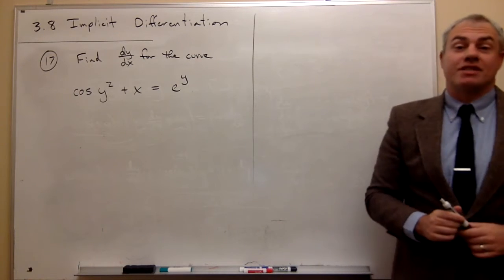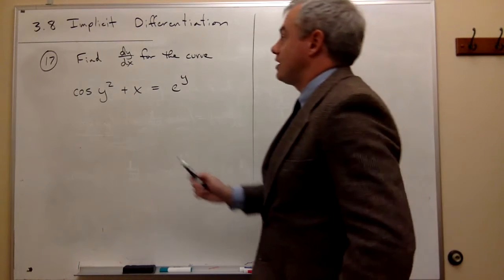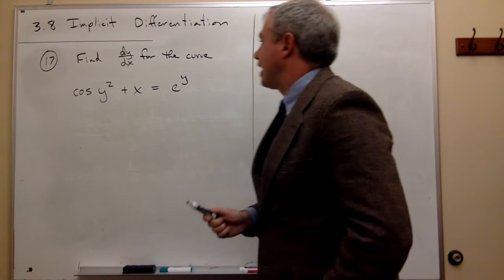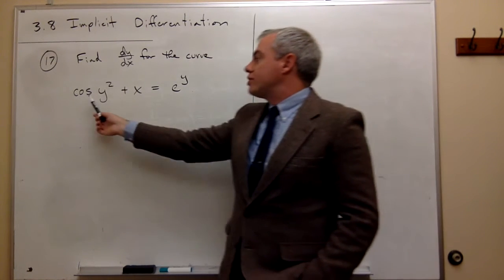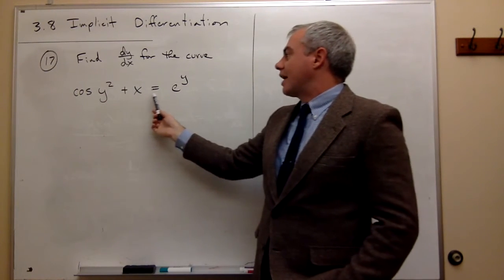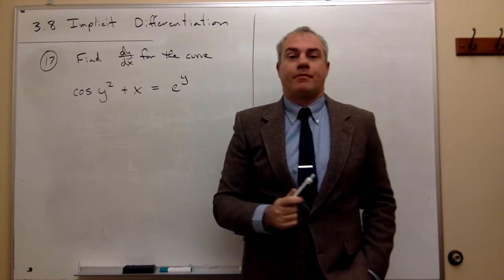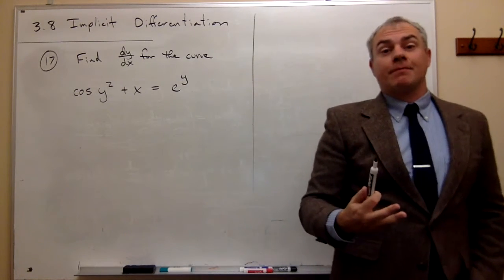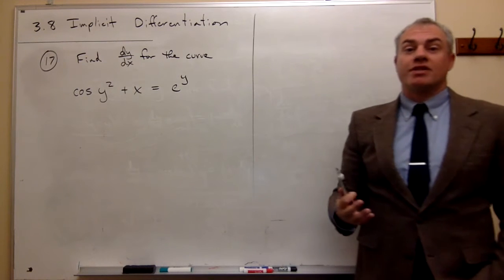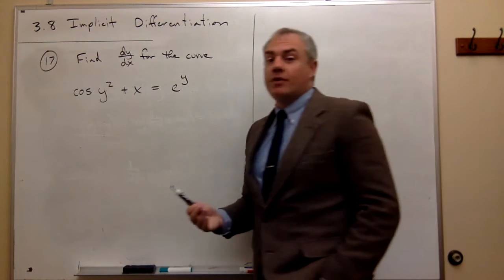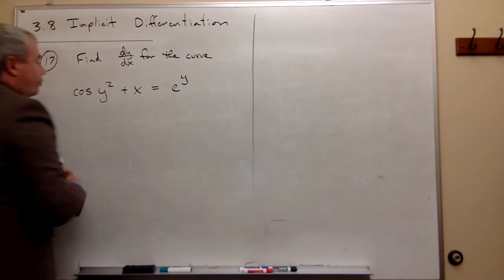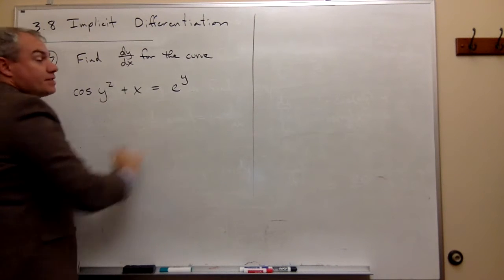Now let's look at problem number 17. I'd like to find dy/dx for the curve cos(y²) + x = e^y. We're using implicit differentiation here, so we just need to take this one step at a time. The first thing we need to do is take the derivative of each of these pieces individually.